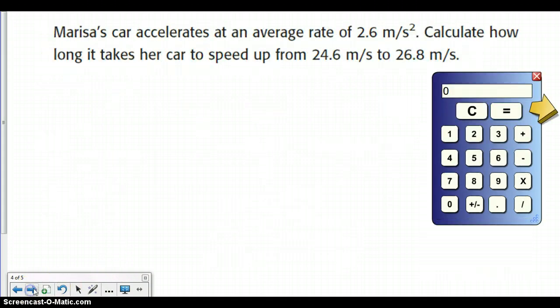If we go to the next page, we see that it's the same sort of problem. So let's start with doing all of our variables. Marissa's car accelerates at an average rate of 2.6 meters per second squared. Calculate how long it takes her car to speed up from 24.6 meters per second to 26.8 meters per second. That means we know our V sub F, our V sub I, and our time is going to be our question mark. So our final velocity was 26.8 meters per second.